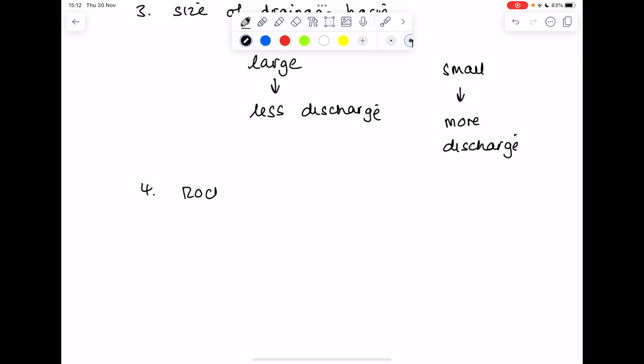Rock type also has an effect. If you have an impermeable rock like granite, you will see more discharge because that water is not going to soak in. If you have a permeable rock like limestone, you will get less discharge.